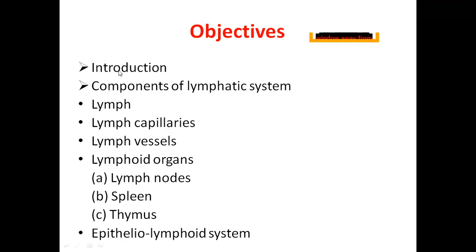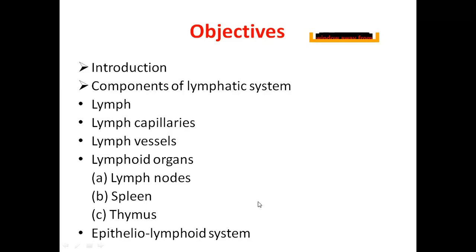The objectives of today's lecture are: we will see the introduction, components of lymphatic system, what is lymph, what are lymph capillaries, the difference between lymph capillaries and lymph vessels, what are the various lymphoid organs — lymph nodes, spleen, thymus. We will also study a few points about the epithelio-lymphoid system.